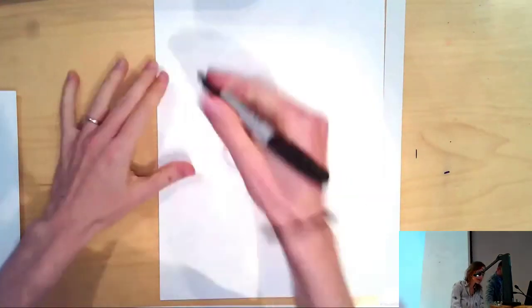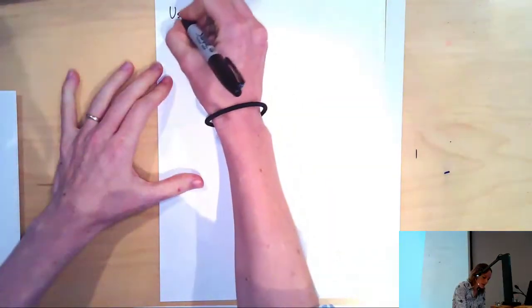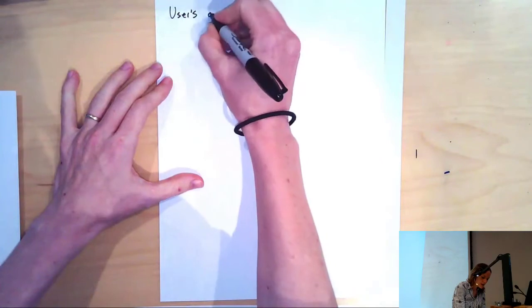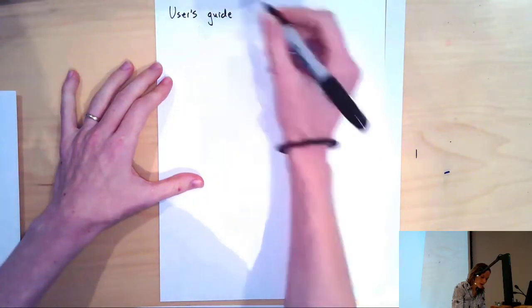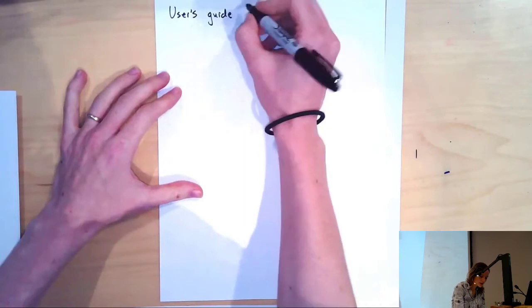So right now we're going to give a user's guide to A¹-homotopy theory for doing arithmetic enrichments of enumerative results.